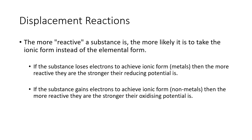Because they are losing electrons — which is oxidation — they will cause the other substance to undergo reduction, and that other substance may be another metal. If a substance gains electrons to achieve ionic form — that's non-metals — the more reactive they are, the stronger their oxidizing potential is. So halogens, if they're more reactive, have a stronger oxidizing potential, or the ability to cause another substance to oxidize. For example, an elemental halogen can make a halide ion oxidize back into elemental halogen while the elemental halogen becomes an ion.